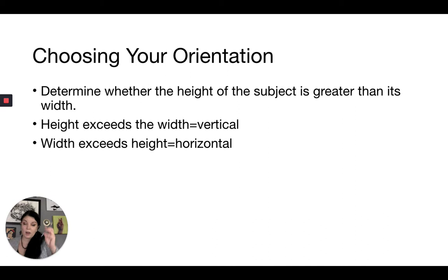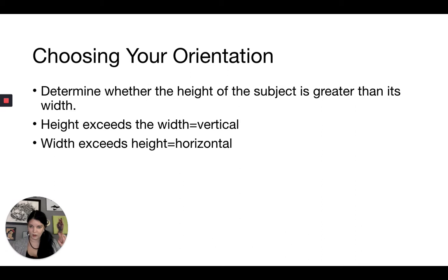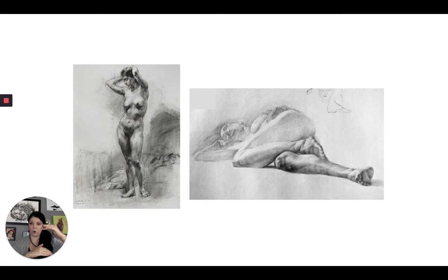Generally speaking, you look at whatever you're drawing and try to determine which way to orient your sketchbook, drawing pad, or canvas based on pretty simple logic. If the height exceeds the width, you want a vertical or portrait orientation. If the width exceeds the height, you want a horizontal or landscape orientation. I know that seems pretty basic, but this is drawing one — we go through the basics step by step so we don't accidentally leave anything out. Here are some examples: on the left, a vertical or portrait orientation; on the right, a horizontal or landscape orientation.